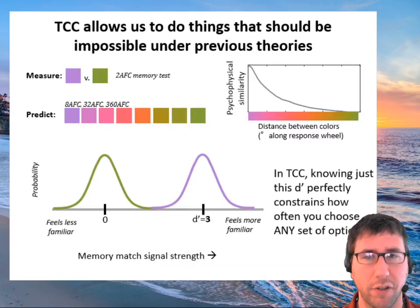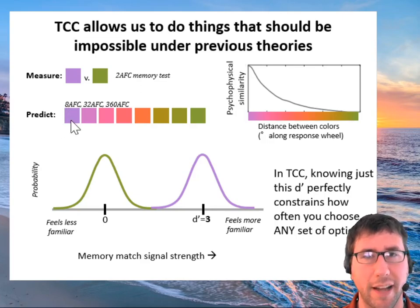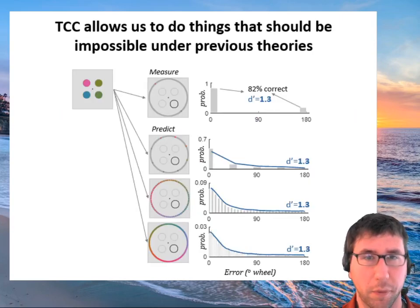TCC, by contrast, makes a very strong prediction that once you've measured d-prime, which you can do with purple versus green, that tells you how much boost purple got, and all of the other possible things are completely predictable. That is, those are just based on the fixed similarity function. So we know exactly how similar each of those colors is to purple, and so we can predict exactly what the task people are doing: they're choosing the maximum of these eight samples from these distributions, or 360 distributions.